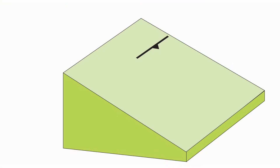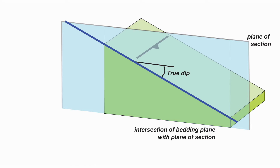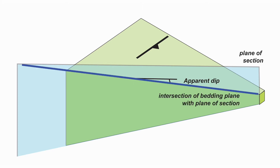Here's a bedding plane and a plane of section drawn in the dip direction, so the angle bedding displays is its true dip. The bedding plane and the section plane make a line of intersection, and we plot this intersection as a pitch on the plane of the cross-section. For an oblique section line, the bedding displays as an apparent dip, which is less than the true dip. Again, the bedding plane and section plane make a line of intersection plotted as a pitch on the oblique cross-section.